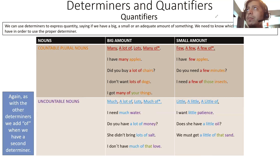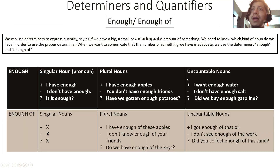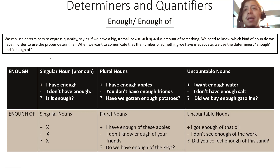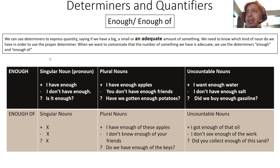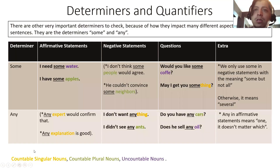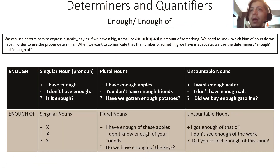We have 'enough' and 'enough of.' When do we use this? What is 'enough'? What is 'enough of'? 'Enough' means sufficient. When you're speaking about 'enough' anything, it means 'sufficient' anything. I have enough pens — it means I don't need more pens. I have enough time — I don't need more time. We can use determiners to express quantities saying that we have an adequate amount of something. We need to know which kind of noun we have in order to use the proper determiner. When we want to communicate that the number of something we have is adequate, we use 'enough' and 'enough of.'